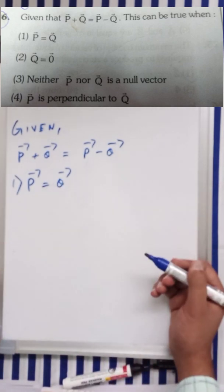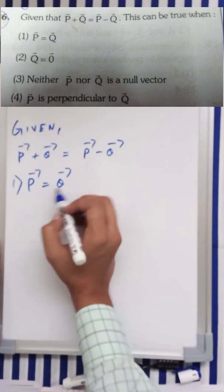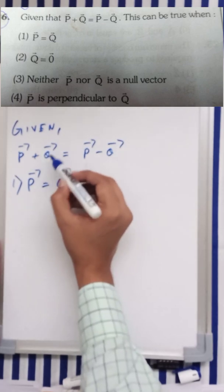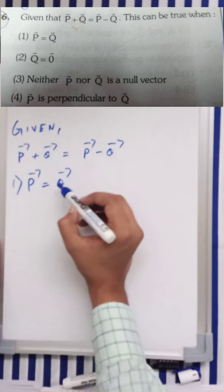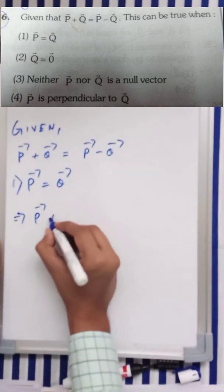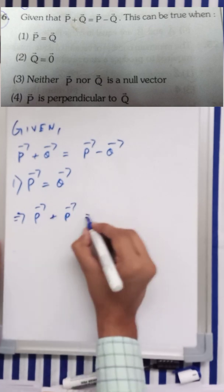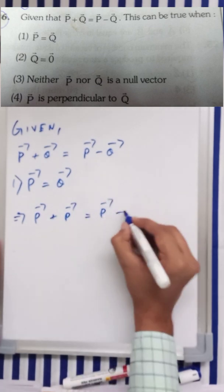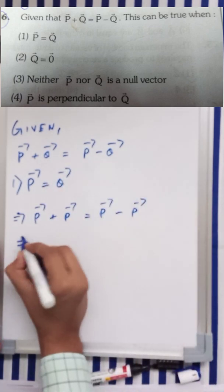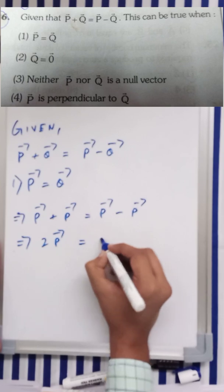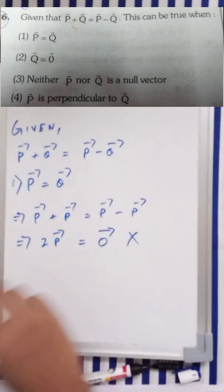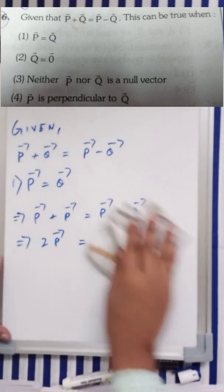Let's talk about the first option. It is given p vector is equal to q vector. If we replace the value of q vector by p vector, it will be p vector plus p vector is equal to p vector minus p vector, giving us 2p vector equals null vector, which is wrong. So your first option is wrong.